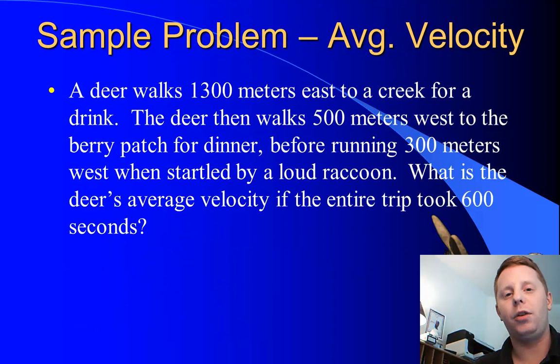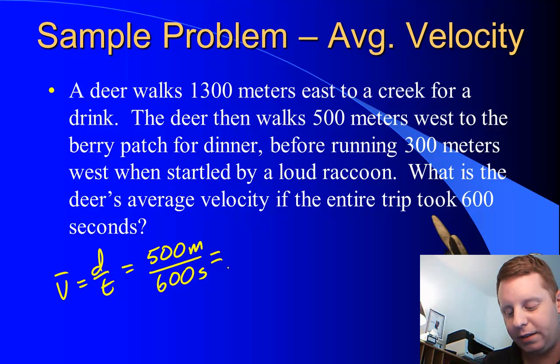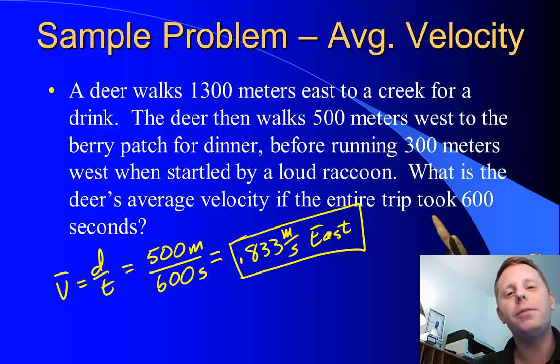Let's look at a sample problem again, going back to our deer. Same deer, same actions, but now we want to know the deer's average velocity. We can use the same formula. Average velocity is D over T, but now that D is displacement. We said the displacement of our deer was 500 meters east, and all this took a time of 600 seconds, so the deer's average velocity was only 0.833 meters per second, compared to the average speed, which was 3.5 meters per second. And because average velocity is a vector, we need a direction here as well.